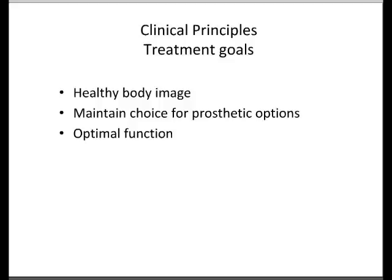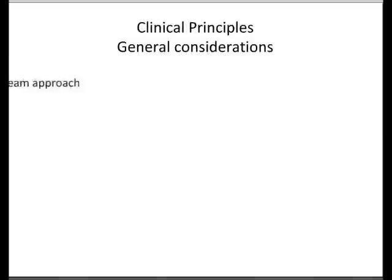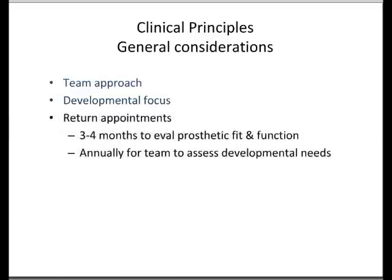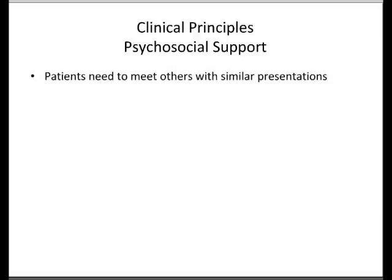General considerations include a team approach — this should be managed in a place that deals with this frequently, with a multidisciplinary team, allowing for regular follow-up. Every three months is recommended to evaluate prosthetic fit and function, with annual reassessment of the child's development, especially when they're young. Psychosocial support is very key. It's important that children meet others with similar conditions, more so as they get older, to create a better body image. There's often a lot of guilt and associated family problems if there's a genetic component, requiring genetic counselling.